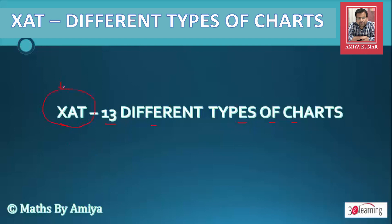JAT is known to ask questions on different types of charts. In this session, we are not going to solve a single question, but try to understand how different types of charts look and what their interpretations are. If you get any of these 13 charts, you can solve questions easily.